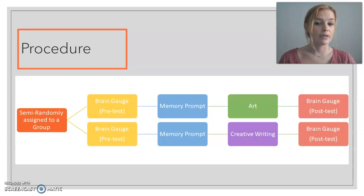I then gave them either the control group prompt or the experimental group prompt with the collage or the writing activity, and then they completed one of those. And then after that, everybody completed the post-test brain gauge cognitive assessment. This all happened in a one-time session for everybody, and it lasted about one hour.